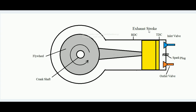In the working stroke, the ignited fuel pushes the piston toward the bottom dead center. At the end of the working stroke, the outlet valve opens and the piston pushes all the burnt gases out of the cylinder, because the work has been done and there is no more requirement of burnt gases inside the cylinder.